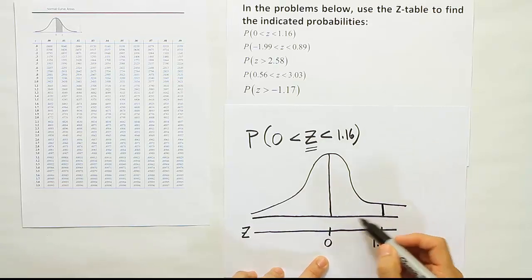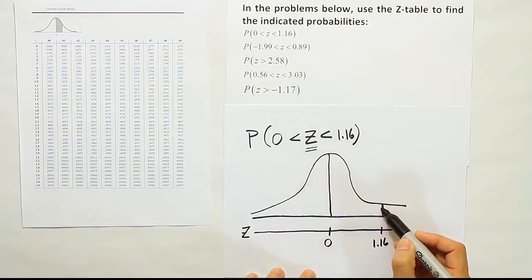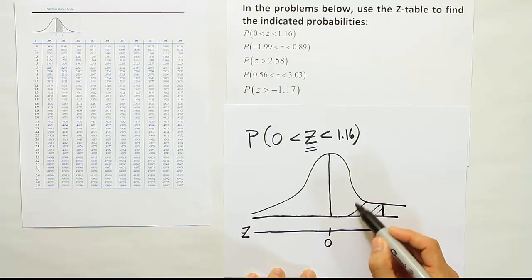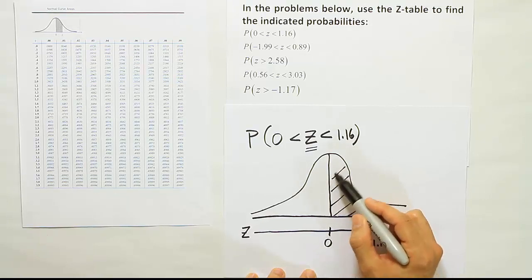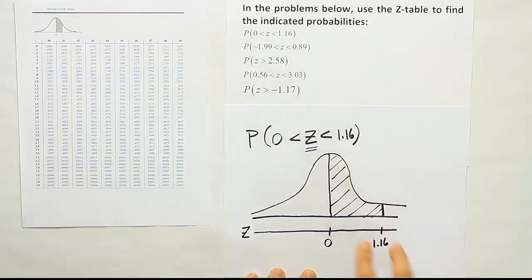Now on the curve, the reason why we use this as a visual aid is because we could shade the desired area then. So that probability is equivalent to the area under the curve. And the area under the curve here would be the area between 0 and 1.16.